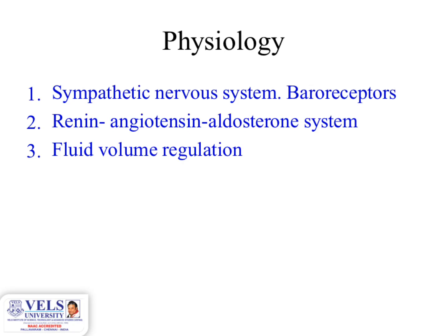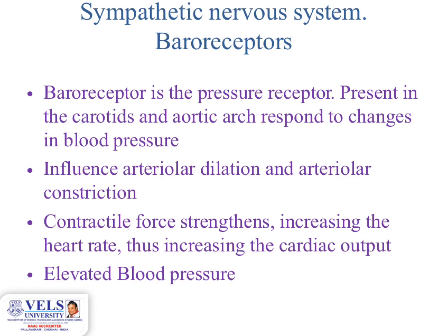Coming to the physiology of hypertension — first, the sympathetic nervous system and baroreceptors. Baroreceptors are pressure receptors present in the carotids and aortic arch that respond to changes in blood pressure. They influence arterial dilation and constriction, contractile force strength, heart rate, and cardiac output, ultimately resulting in elevation of BP.